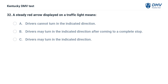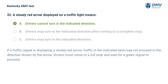A steady red arrow displayed on a traffic light means: A. Drivers cannot turn in the indicated direction. B. Drivers may turn in the indicated direction after coming to a complete stop. C. Drivers may turn in the indicated direction. The correct answer is A, drivers cannot turn in the indicated direction. If a traffic signal is displaying a steady red arrow, traffic in the indicated lane may not proceed in the direction shown by the arrow. Drivers must come to a full stop and wait for a green signal to proceed.